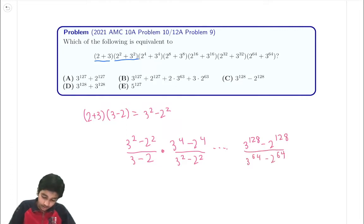Because we know that 2 to the 64 plus 3 to the 64 times this expression here is just 3 to the 128 minus 2 to the 128.